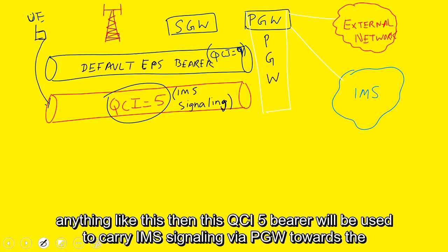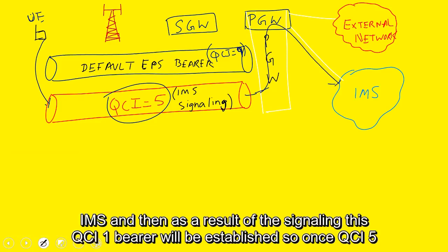then this QCI5 bearer will be used to carry IMS signaling via PGW towards the IMS and then as a result of the signaling, this QCI1 bearer will be established.